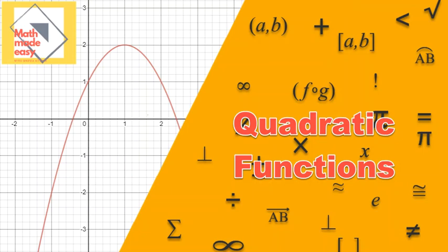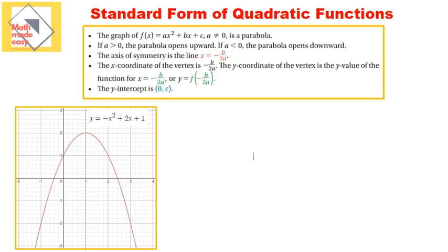Let's look at our first example. Before we go through the graph and discuss its details, we are going to look at the rules of quadratic functions. The graph of f of x equals ax squared plus bx plus c — this is the standard form. You need to know that this is the standard form: f of x equals ax squared plus bx plus c, where a, b, and c are constants. These are going to be numbers, and we're only going to have x squared and x as variables in the equation.